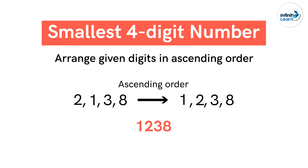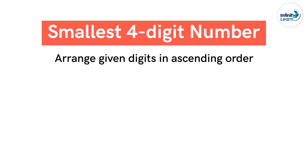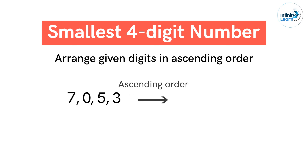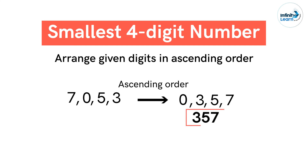Now, can you find the smallest number possible using the digits 7, 0, 5, 3? We need to arrange the digits in ascending order to get the smallest number. But when the digits 7, 0, 5, 3 are arranged in ascending order, we get 0 as the first digit. This gives us 0357, which equals 357 — a three-digit number, not a four-digit number.